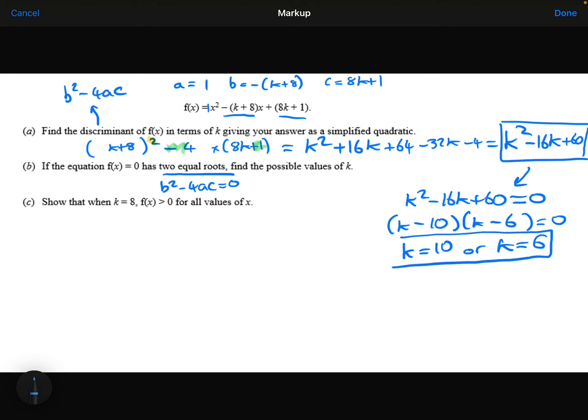If k has either of those values, then the equation will have two equal roots. Then for part C, we need to show that when k is 8, f(x) is greater than 0 for all values of x.